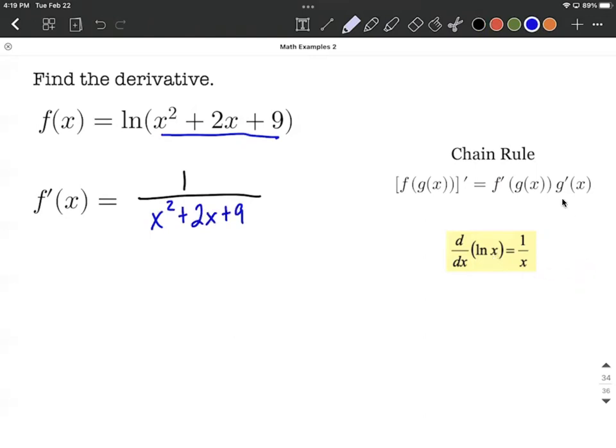According to the chain rule, we multiply by the derivative of the inner function. That inner function is the quadratic, so its derivative using the power rule is 2x plus 2 plus 0.